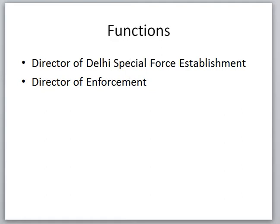Regarding appointing functions: the Central Vigilance Commission appoints two major directors. First, the Director of the Enforcement Directorate is appointed by the Central Vigilance Commission. Second, for the appointment of the CBI Director — who is appointed by the President — the process is done in consultation with a committee within the Central Vigilance Commission, which recommends which person should be appointed as CBI Director.